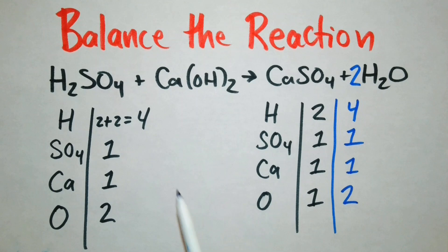And so now it looks like we have a balanced equation. We have four hydrogens on both sides, one SO4 group on both sides, one calcium on both sides, two oxygens on both sides. If you found this video helpful would you please consider like commenting or subscribing and until next time keep on learning.